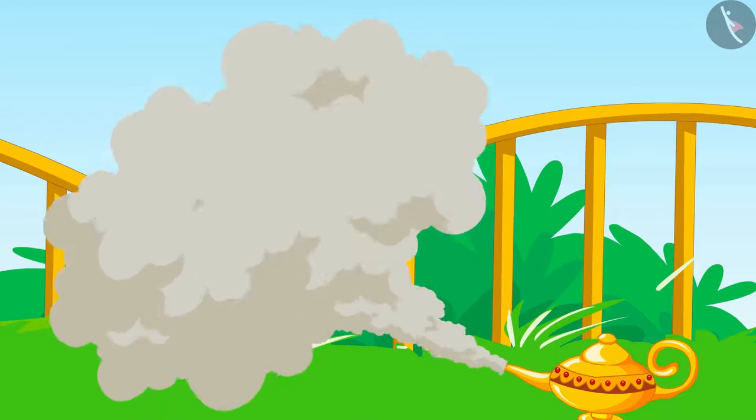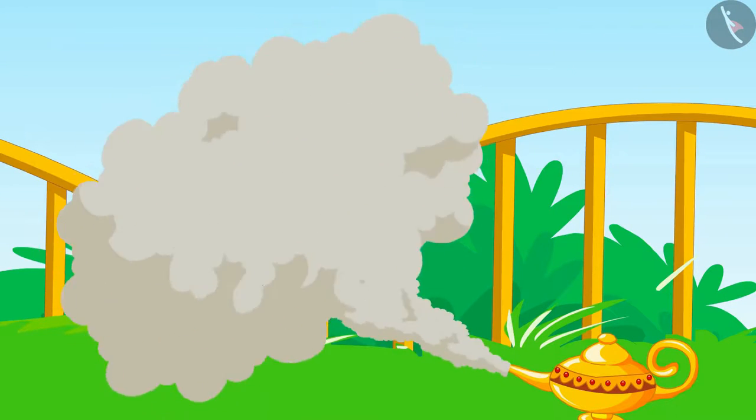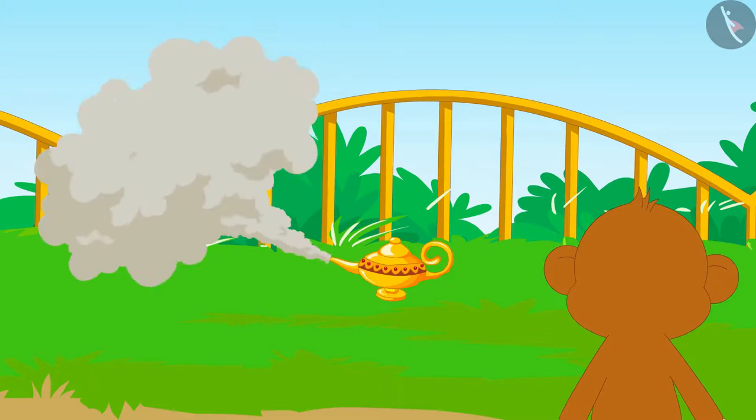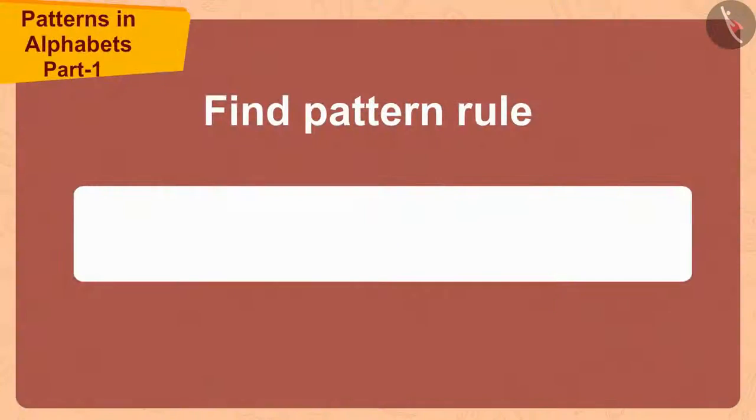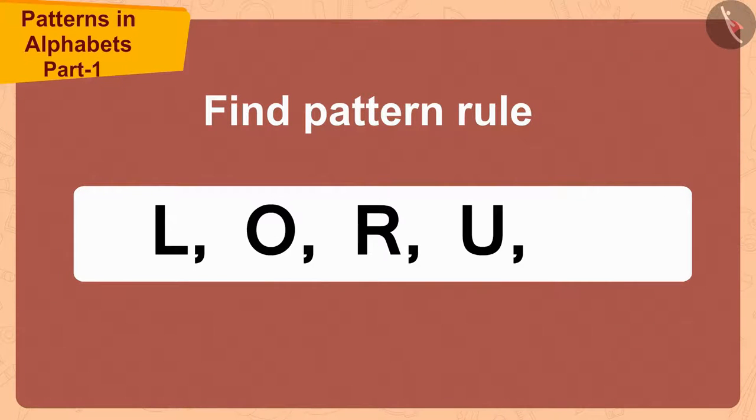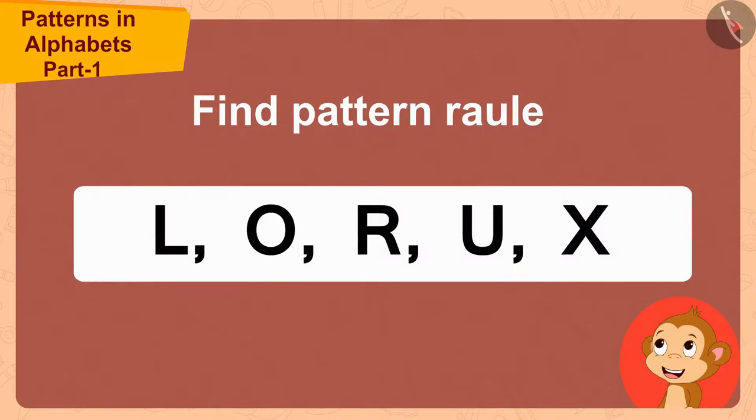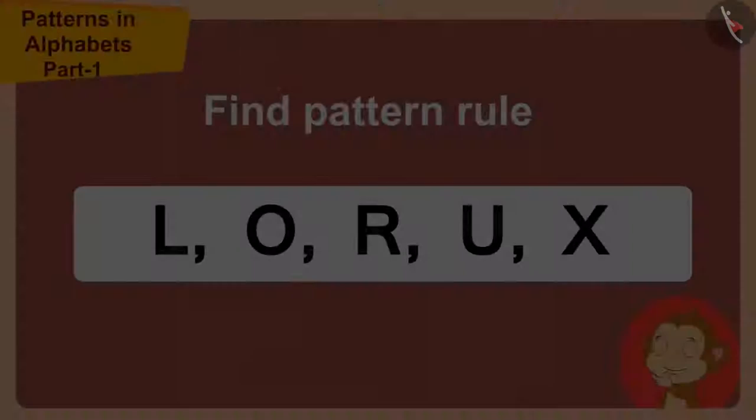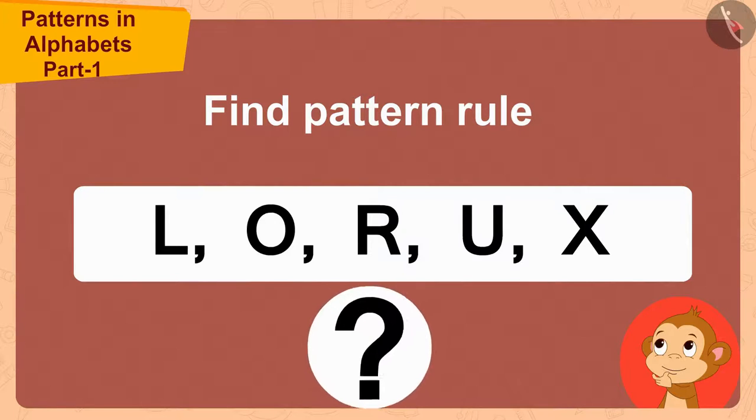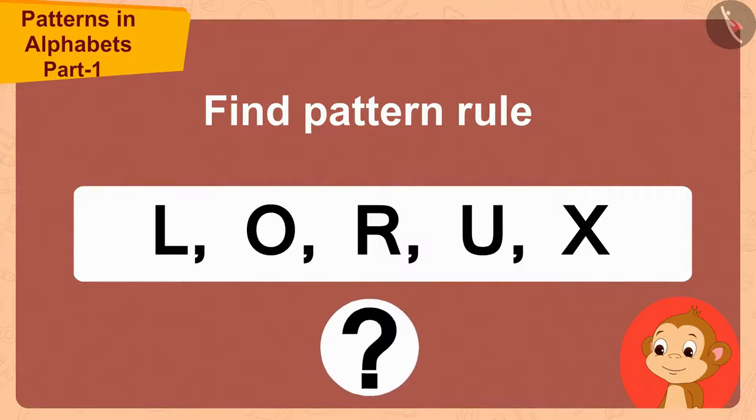This is your last pattern. Find the rule of this pattern and fulfill your third and last wish. Saying this, the genie showed Babban this third pattern. Babban was shocked. It looks like a very difficult pattern. Children, can you help Babban in finding the rule of this pattern? If you want, you can stop the video and find the answer.